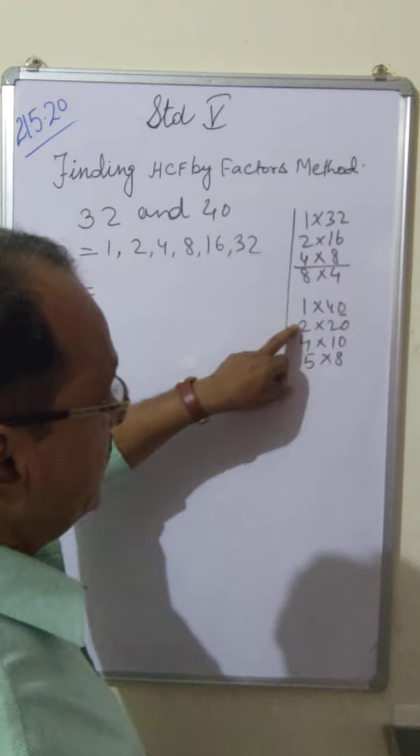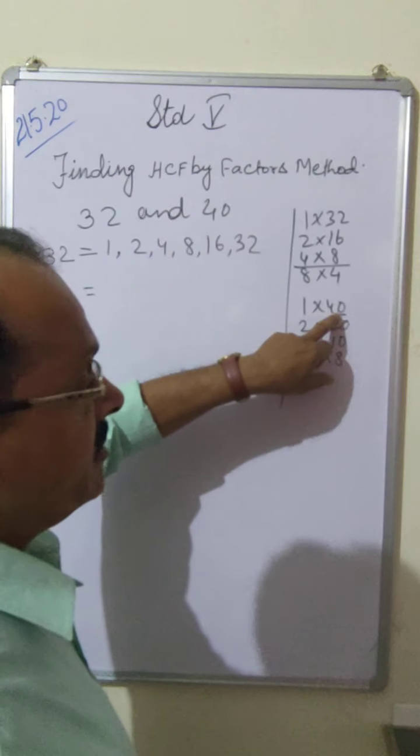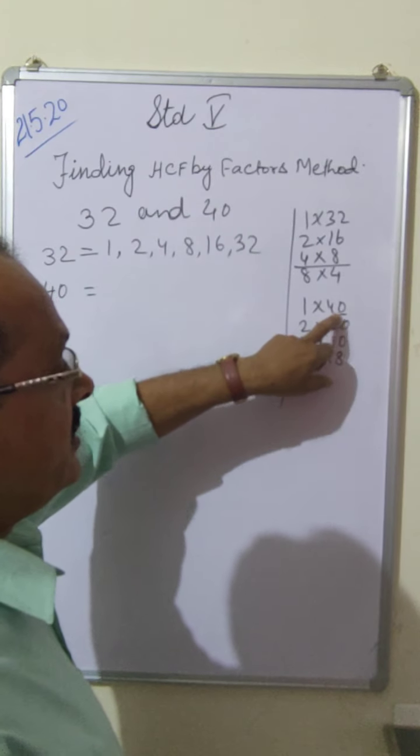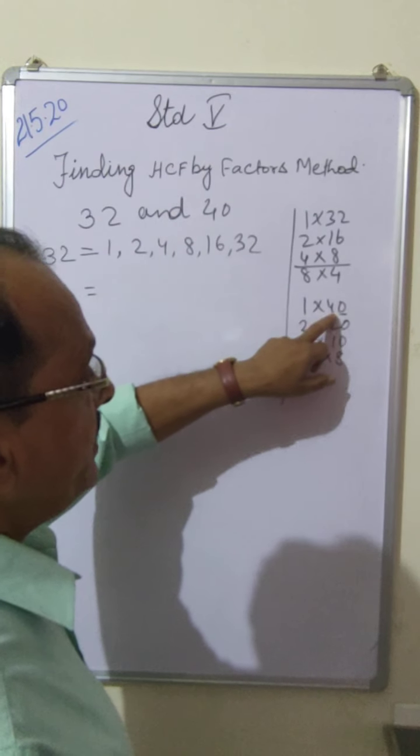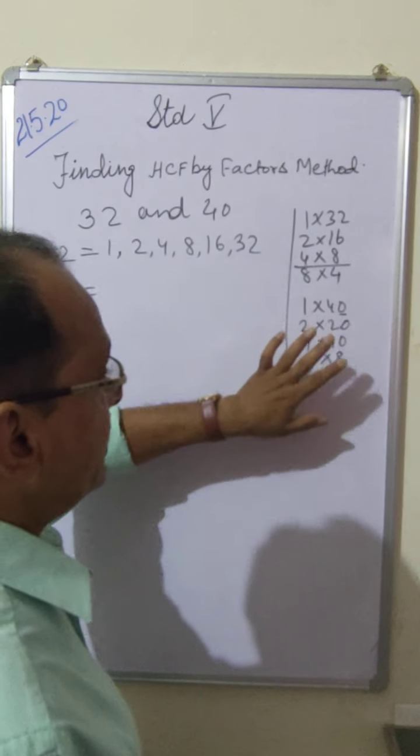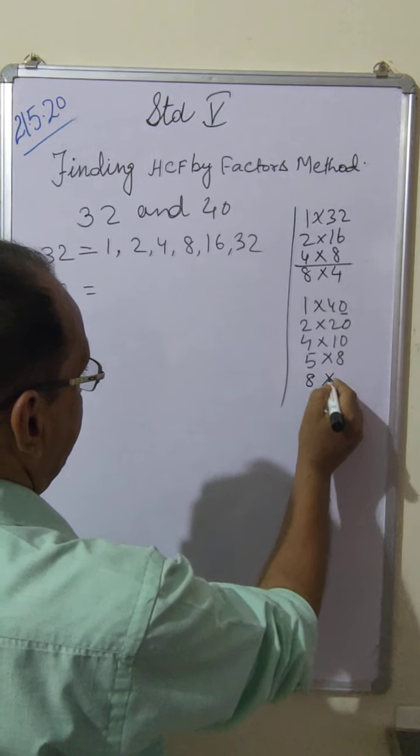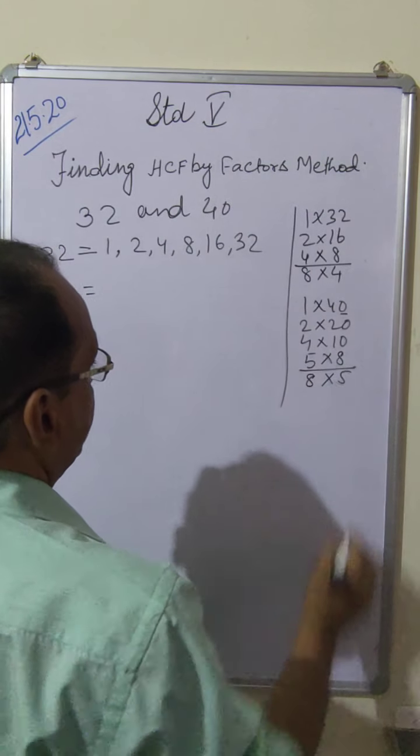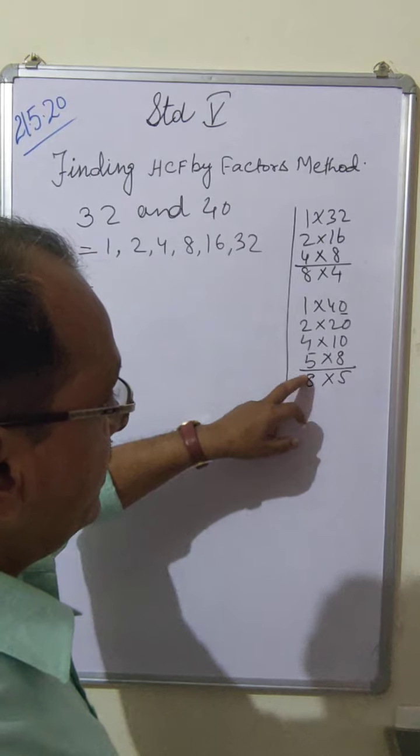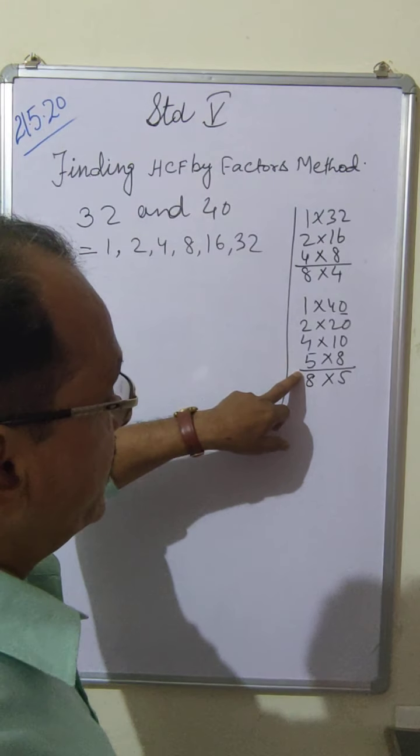Now here is not 2, 3 so it is not divisible by 6. Now not divisible by 7, 40 is not divisible by 7. So again 8, 8 times 5. Repetition starts there, you have to stop your work.